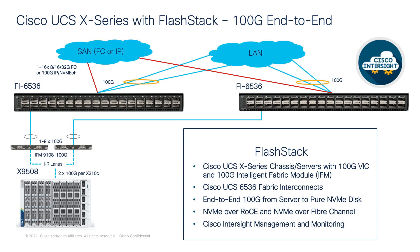There are eight QSFP28 external connectors on an IFM to interface with a 6536 Fabric Interconnect to provide 1.6 terabits per second connectivity per chassis. The IFM internally provides two 100 Gigabits per second connections towards each UCS X210C M6 Compute Node.